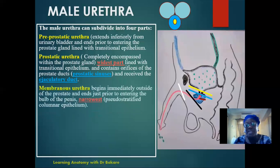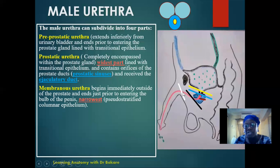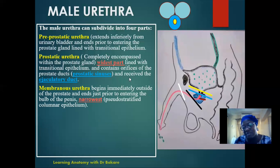The next region is the membranous urethra. This is a very short part that runs just distal from the prostate gland down to the bulb of the penis. The bulb of the penis is like the root of the penis, where the penis begins. This is the narrowest part of the urethra, and it is lined with pseudostratified columnar epithelium. So there is a change in epithelium lining — from transitional in the preprostatic and prostatic urethra, to pseudostratified columnar epithelium in the membranous urethra.